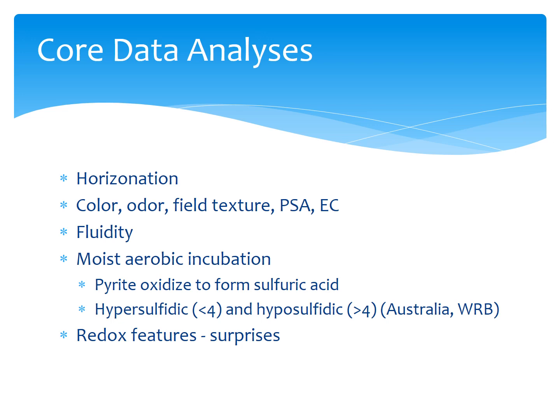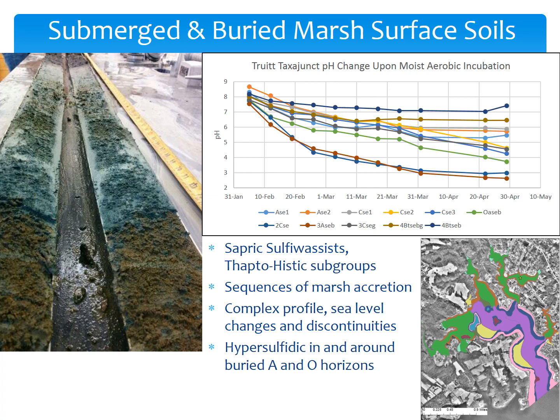We described redox features, which is where we ran into a little bit of a surprise. I'm going to take you through an idealized transect through the landscape, starting with the submerged and buried marsh surface soils. Each slide has a plot of pH data with pH on the vertical axis, time on the horizontal axis, and material types shown. Up here with the buried marsh surface soils, which are usually next to tidal marshes, we find sapric sulfiwassists — that is, organic, subaqueous soils that are highly decomposed and produce a lot of sulfuric acid when allowed to oxidize. Or we find thapto-histic subgroups of other soils, meaning they contain buried O horizons. These represent sequences of marsh accretion, very complex profiles representing sea level changes and discontinuities, and they tend to be hypersulfidic in and around any buried A and O horizons, due to high organic matter content.